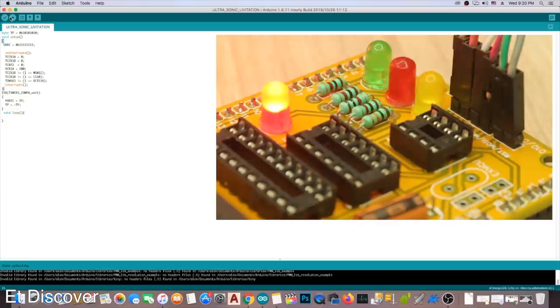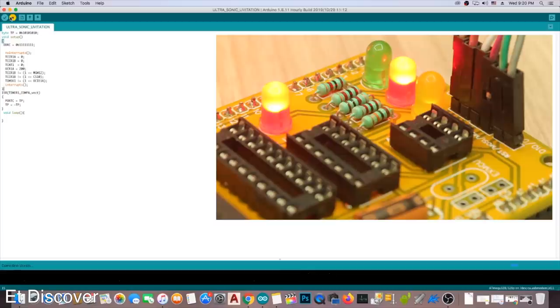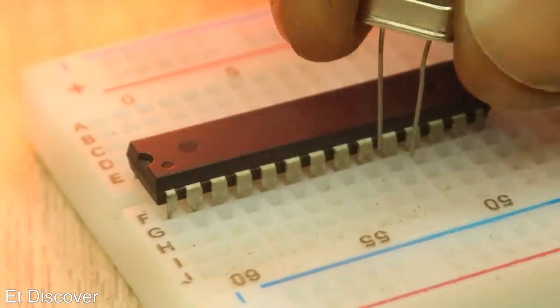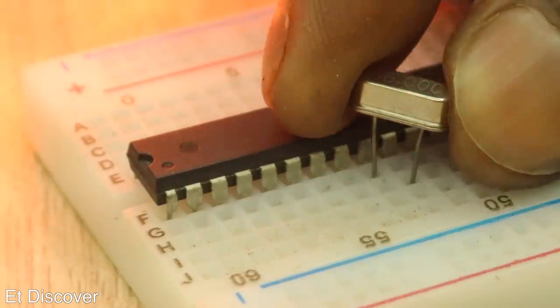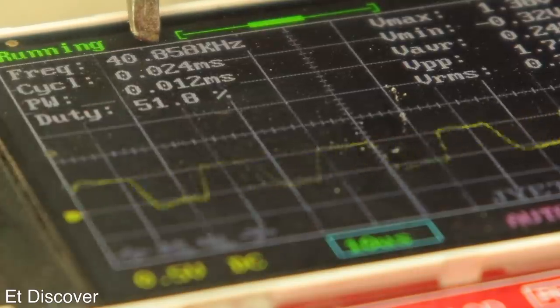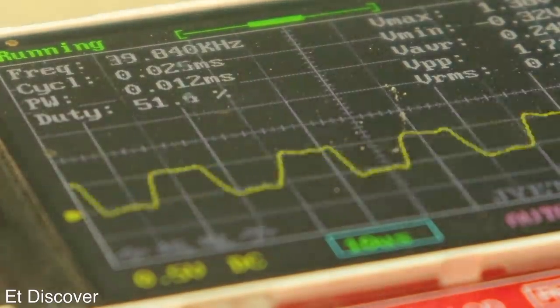After uploading the code, now time to proper checking. So that's why I mount this IC on my breadboard. And definitely I need to set 16 MHz external clock. For better analyze the signal, I use my baby oscilloscope. And you can see here the output is accurately 40 kHz.